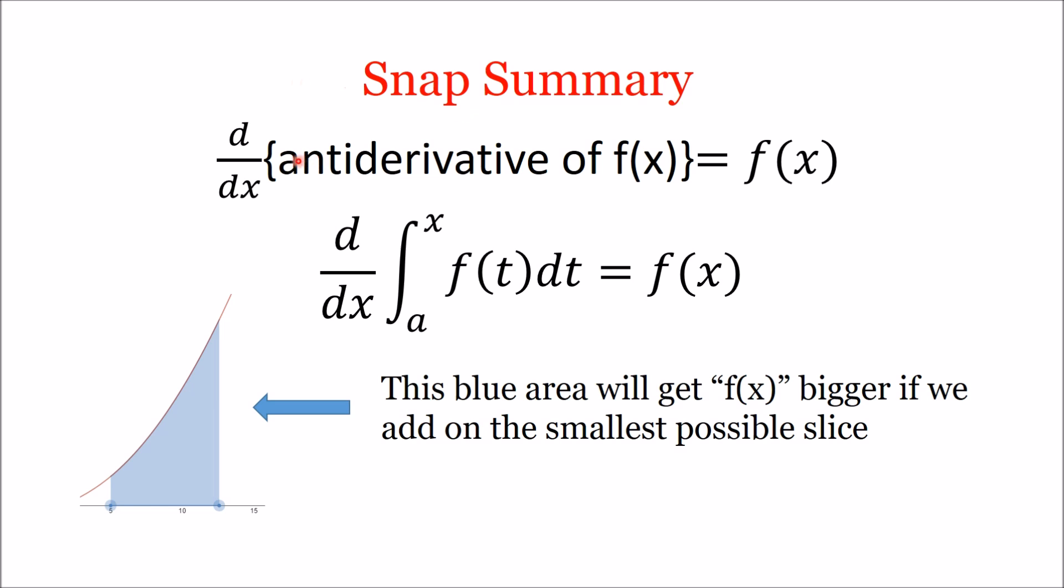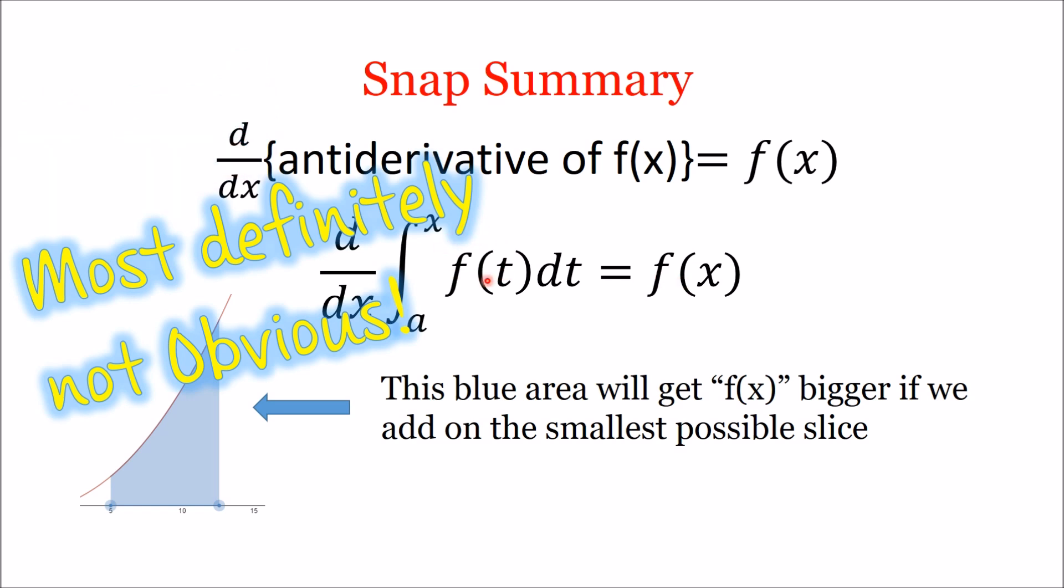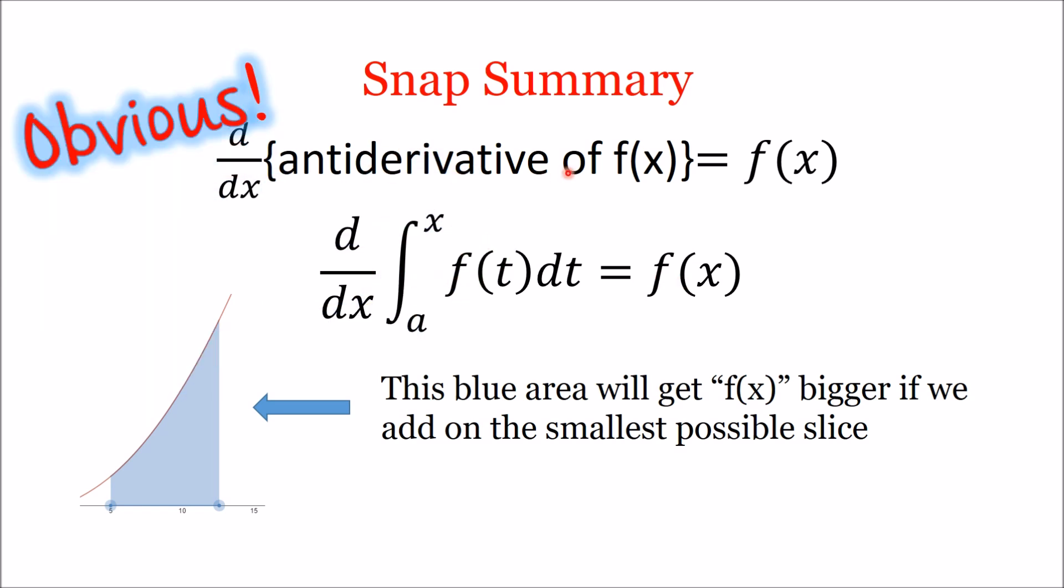Let's do a snap summary. If we look at these two statements, they look like they might be saying the exact same thing, but they're not. This is the whole point of the fundamental theorem of calculus. It's obvious that the derivative of an antiderivative of a function gives you back the original function. It was not obvious that the derivative of an integral of a function gives you back the original function. This established the link between integrals and antiderivatives.